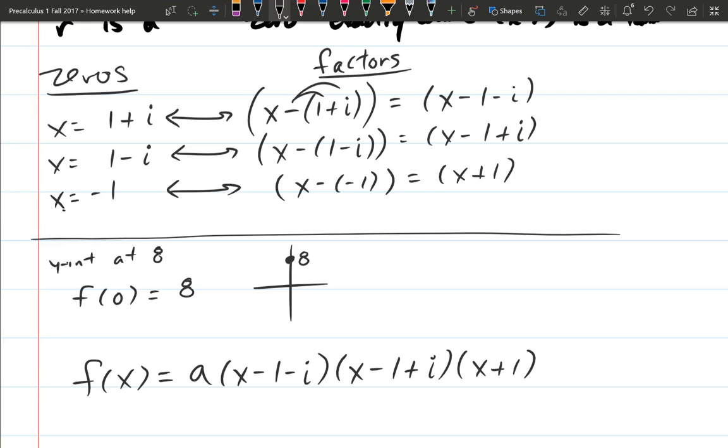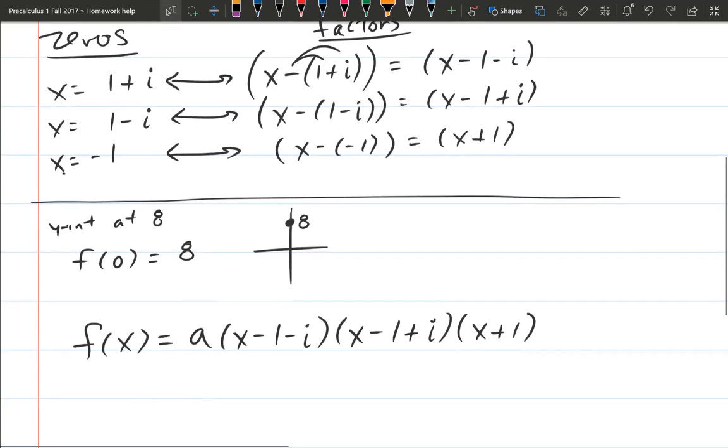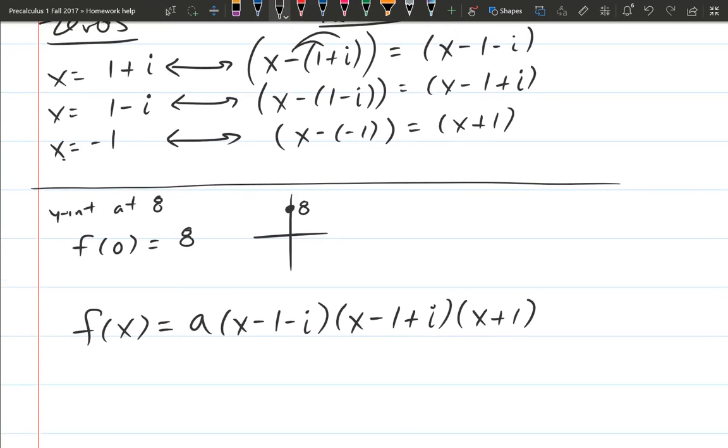If a is 0, it's a very boring polynomial. It'll always be 0, because if a is 0, everything else will turn into 0. So we do need to figure out a. How do we figure that out? Well, we're going to plug in 0 for x. So find a by plugging in 0 for x, and then that will equal 8. So we're going to have 8 equals f of 0.